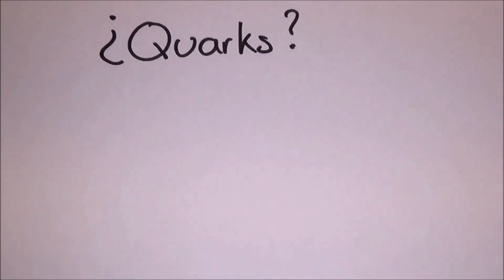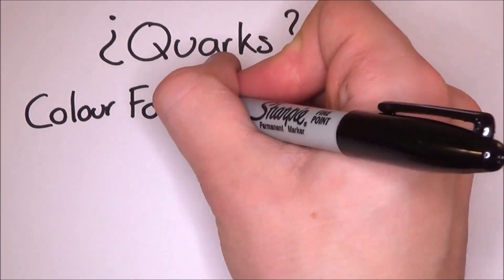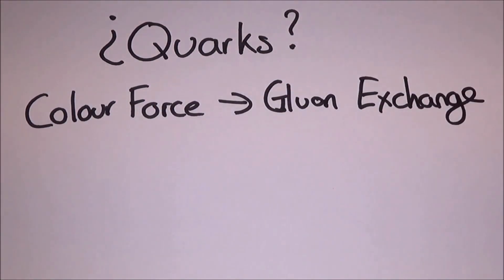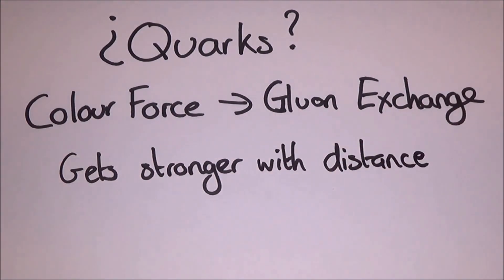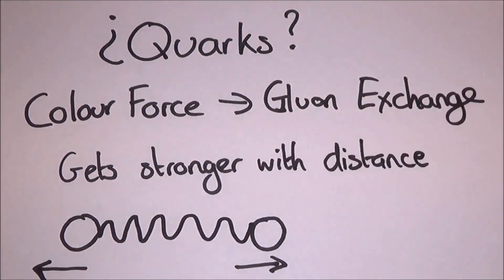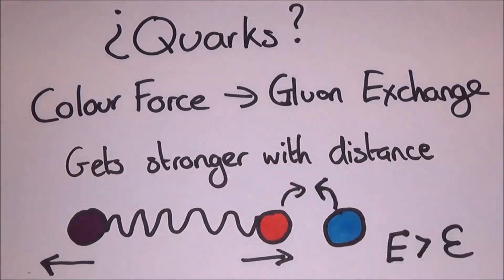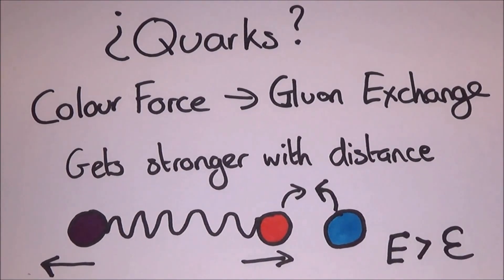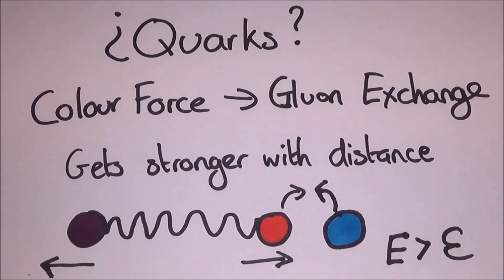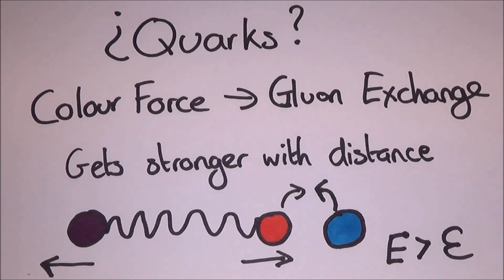So how can we be so confident that these quarks are here because we've never actually seen them? Never isolated them. And there is good reason for this. The colour force, that's the posse name for the exchange of gluons, which I will talk about in a second, doesn't drop off with distance like other observed forces. It is thought that it might even increase with distance. Free quarks are not observed because by the time this separation becomes visible to us, the energy levels are so high that quark-anti-quark pairs can form and ruin everything. Basically, you can't get one on its own.